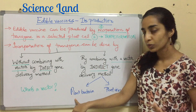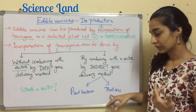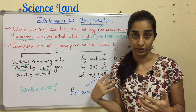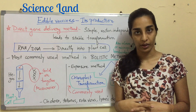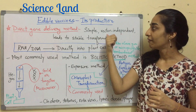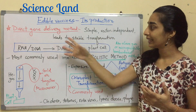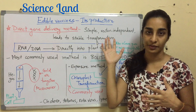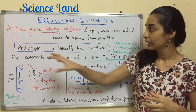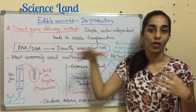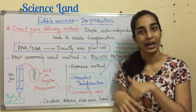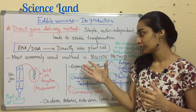If it is an indirect method, there are two subtypes: using a plant bacteria or using a plant virus. Now let's talk about the direct gene delivery method. It is a simple, vector-independent method that leads to stable transformation of plants. In this method, the RNA or DNA — which is the epitope sequence — is directly incorporated into the plant cell.